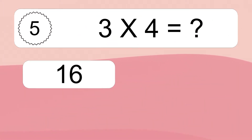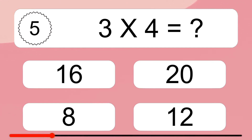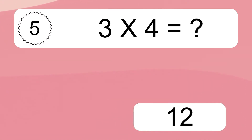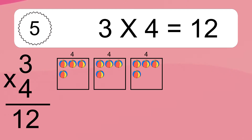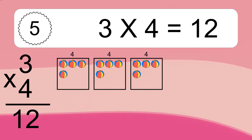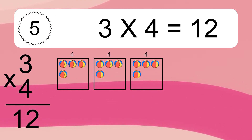3 times 4 equals what? We have 3 boxes, and each box has 4 colorful balls inside. If you count all the balls in all the boxes together, you will have 3 times 4 balls. This equals 12 balls.